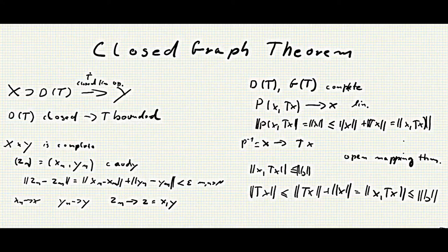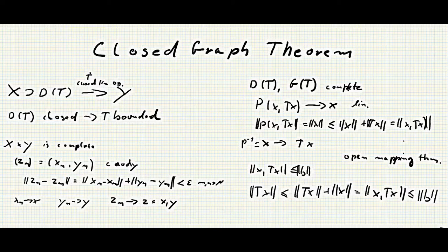Now by assumption the graph of T is closed, because as we said T is a closed linear operator. And this means exactly that the graph of T is closed. And as we now know, X cross Y is complete. So G(T) is a closed subset of a complete space, and thus it is complete itself.